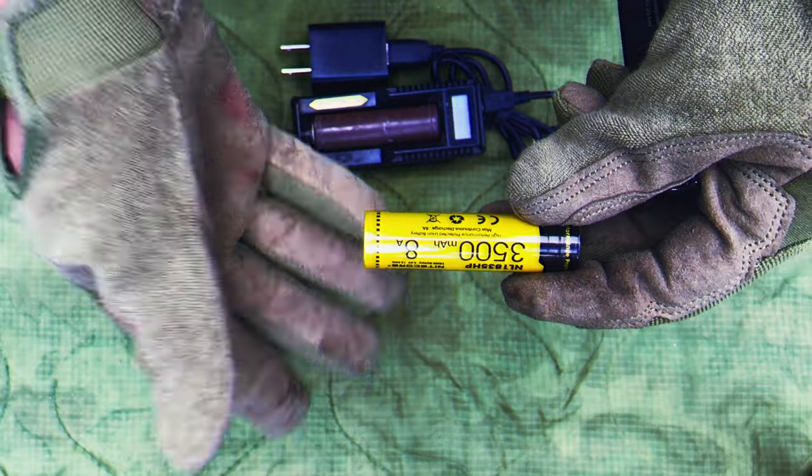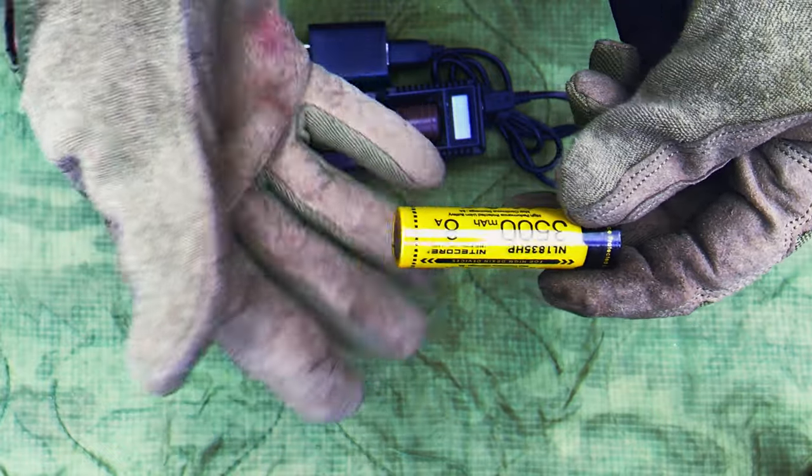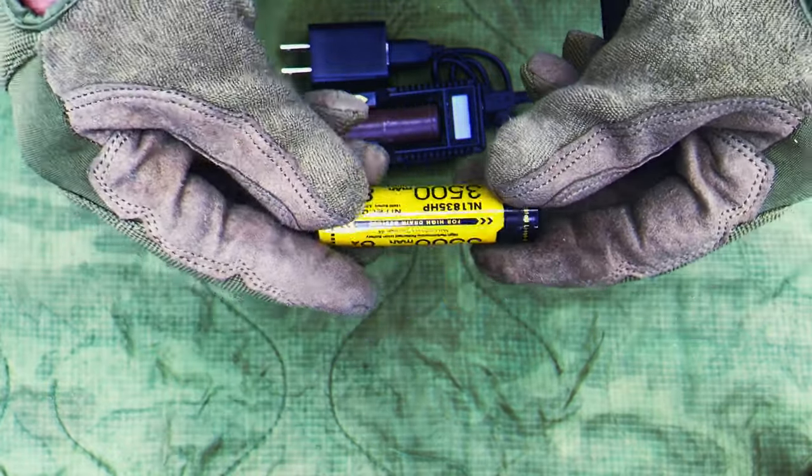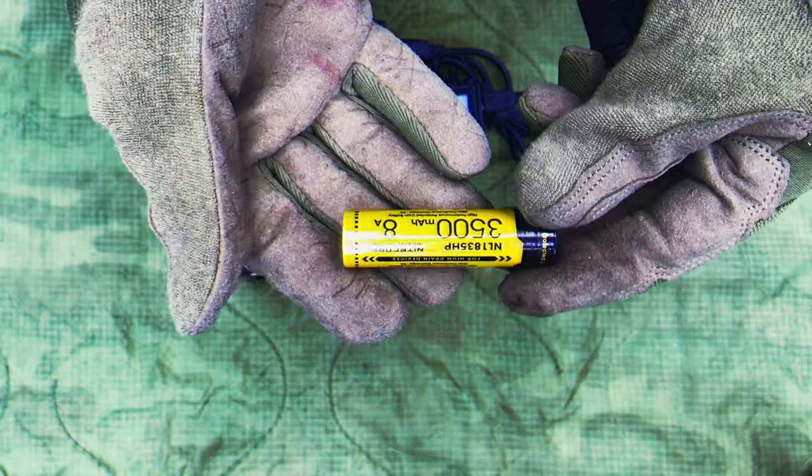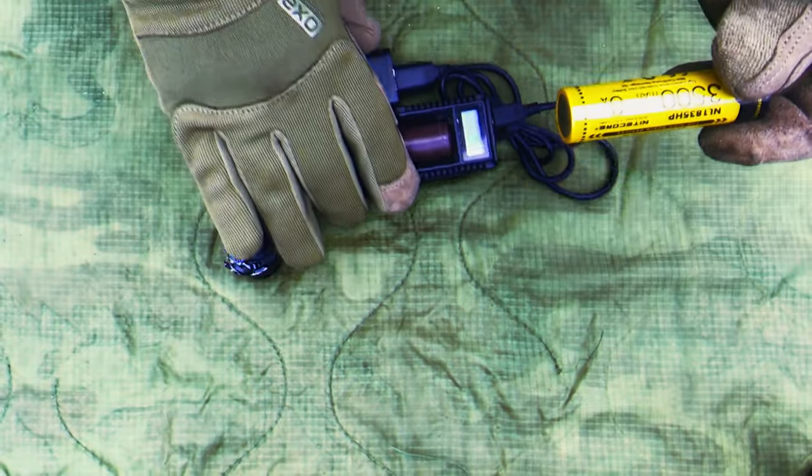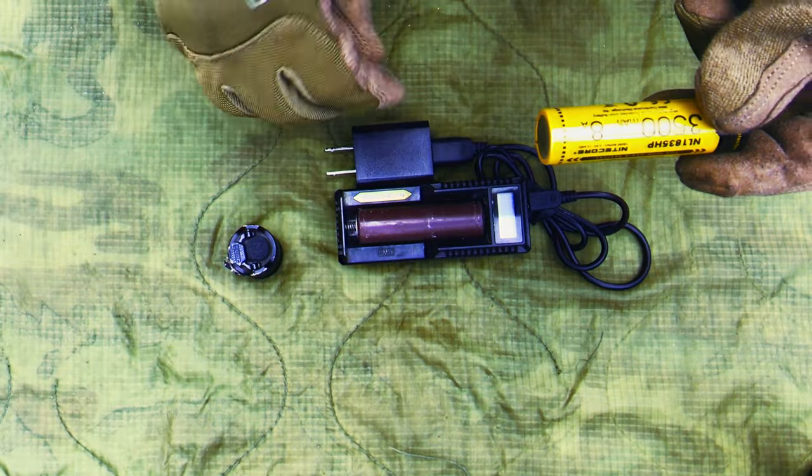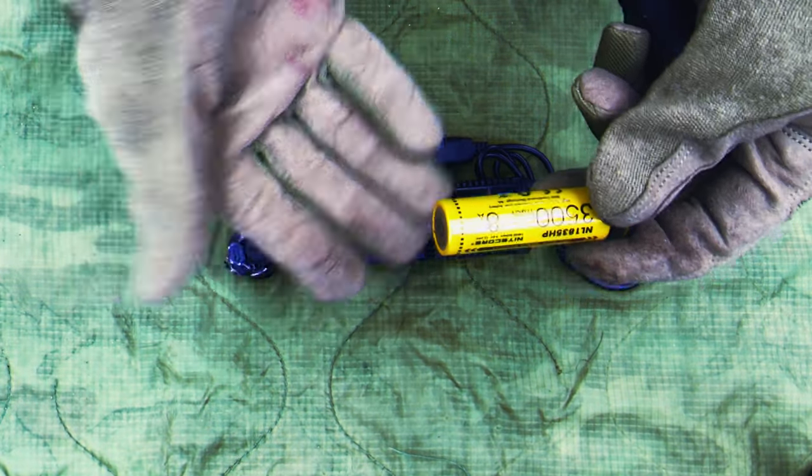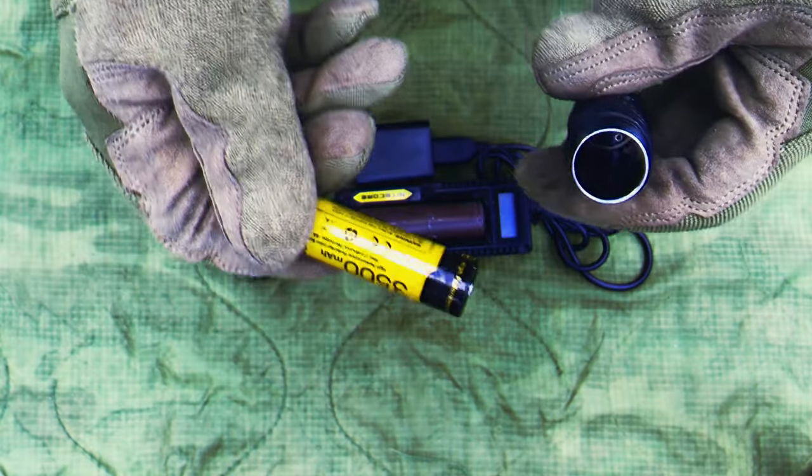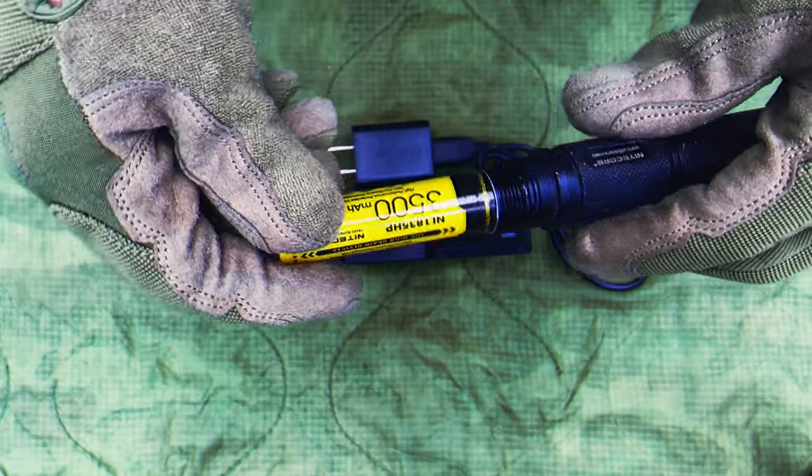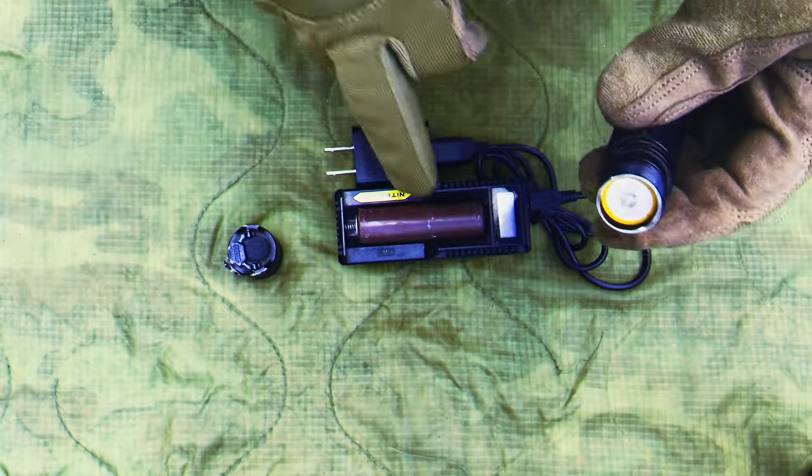Triple A's, double A's, wherever you're going to get them from, they're probably going to be around. Now, this is going to be much more difficult to find. Plus, if there's an issue with EMPs or power, you've got nothing, because this has to be recharged.